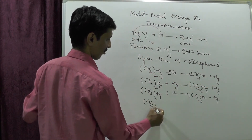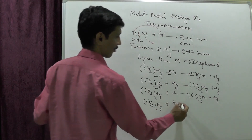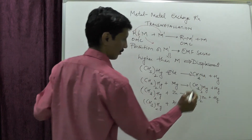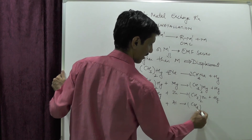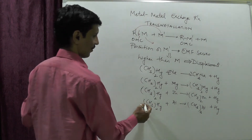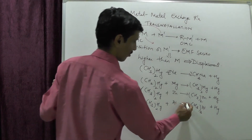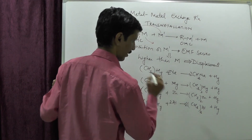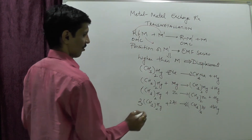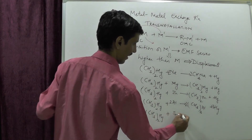With zinc: (CH₃)₂Hg plus zinc gives (CH₃)₂Zn plus mercury. With aluminium — also quite electropositive — the balanced reaction is 3(CH₃)₂Hg plus 2 Al giving 2(CH₃)₃Al plus 3 Hg.